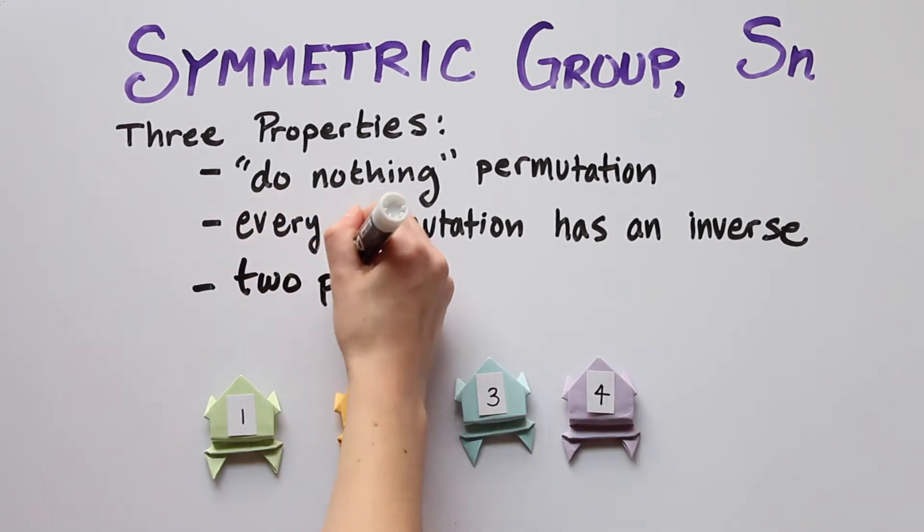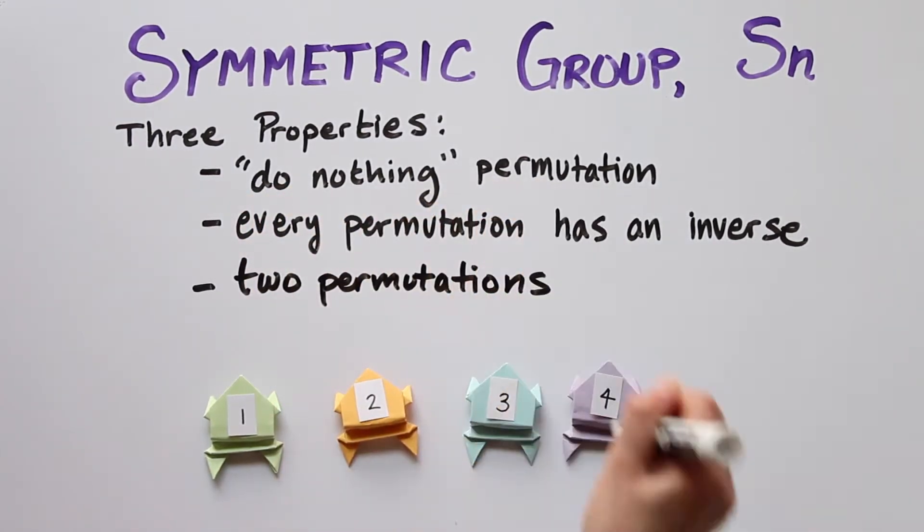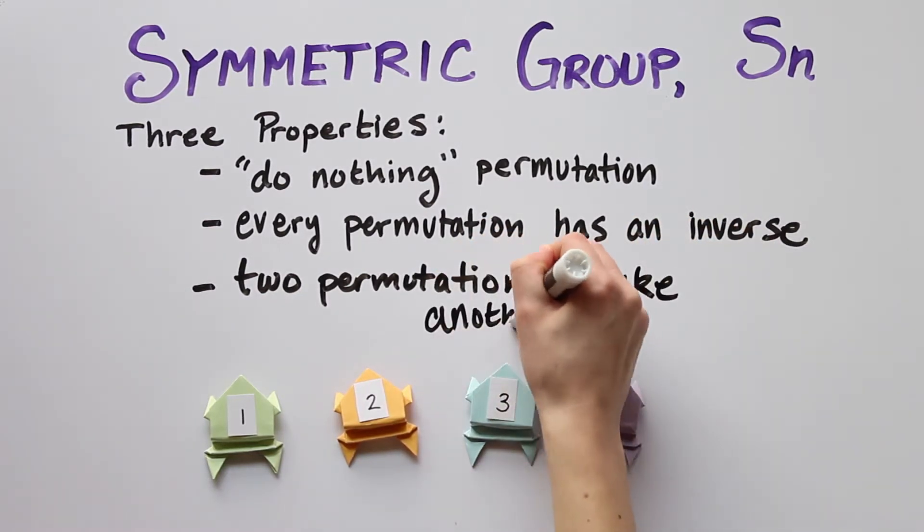Third, if we do one permutation and then another, we get a permutation. This one is pretty self-explanatory.